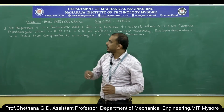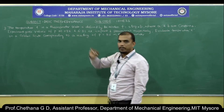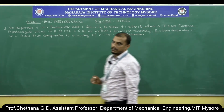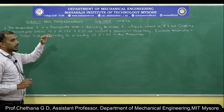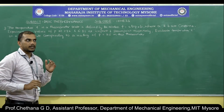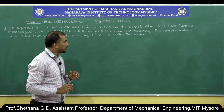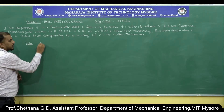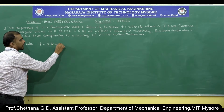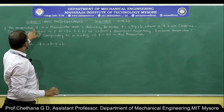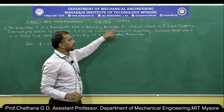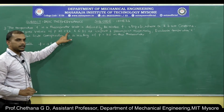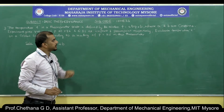The first problem we are considering: the temperature T in a thermometer scale is defined by the relation T = a·ln(p) + b, where a and b are constants. Remember when we were deriving equations for temperatures for different scales, we had taken that temperature is a linear function of the thermometric property. But here it is following a different relation. Experiment gives the values of p as 1.86 and 6.81 at ice point and steam point respectively.